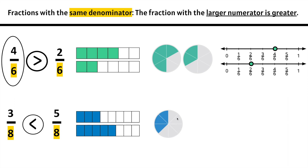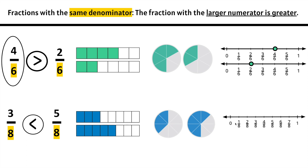Here we have 3 out of 8, or 3/8. Same denominator, 8 equal parts, but we have 1, 2, 3, 4, 5 — 5/8. We can see that 5/8 is greater than 3/8, and 3/8 is less than 5/8. Here we have 0 to 1 whole broken up into 8 equal parts because the denominator is 8. We need 1, 2, 3/8. Here we have 0 to 1 whole, same denominator of 8, and we need 5/8: 1, 2, 3, 4, 5/8. We can see that 5/8 is greater than 3/8.